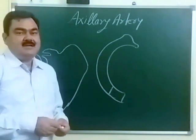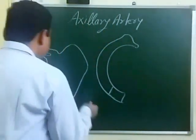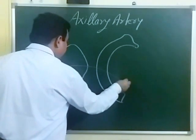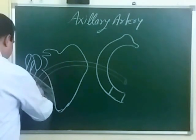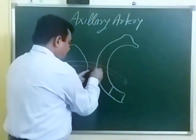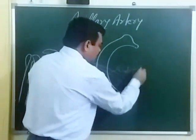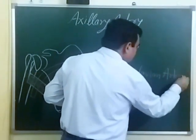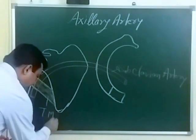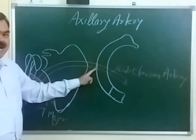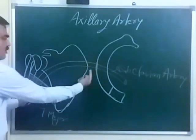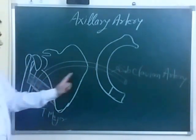Now, the axillary artery is the continuation of the subclavian artery. Here is the subclavian artery. This axillary artery extends from the outer border of the first rib to the lower border of teres major — from this point to this point. So it is a continuation of the subclavian artery.